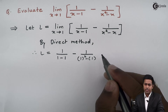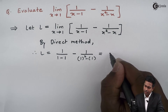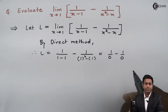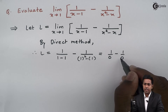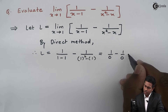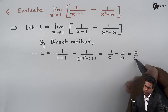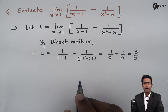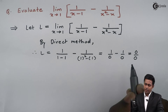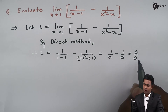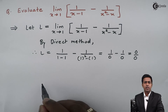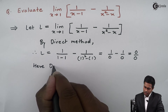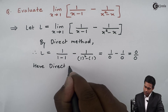Now if we evaluate this, we get 1 upon 0 minus 1 upon 0. If we cross-multiply, that becomes 0 minus 0, giving us 0 upon 0. Whenever we get 0 upon 0, we say it is indeterminate form, and whenever we get indeterminate form by direct method, we say direct method fails. So here, direct method fails.